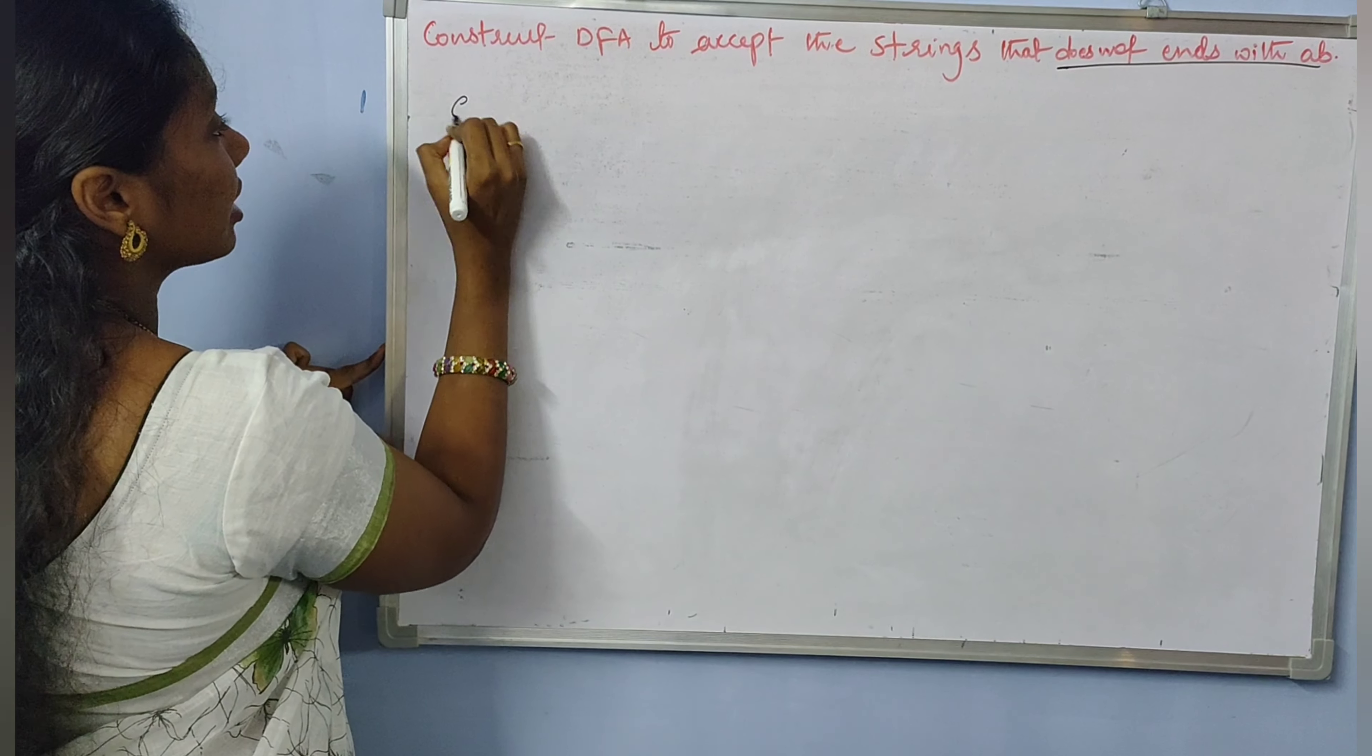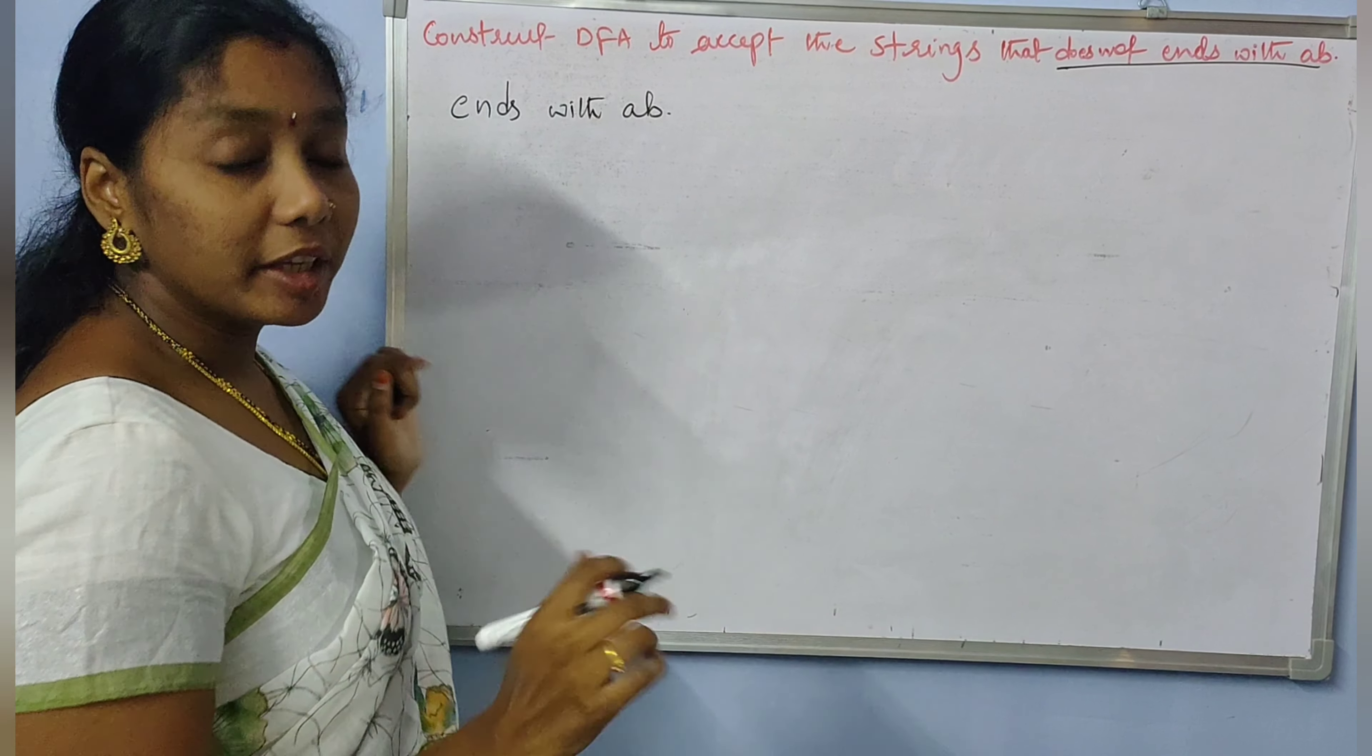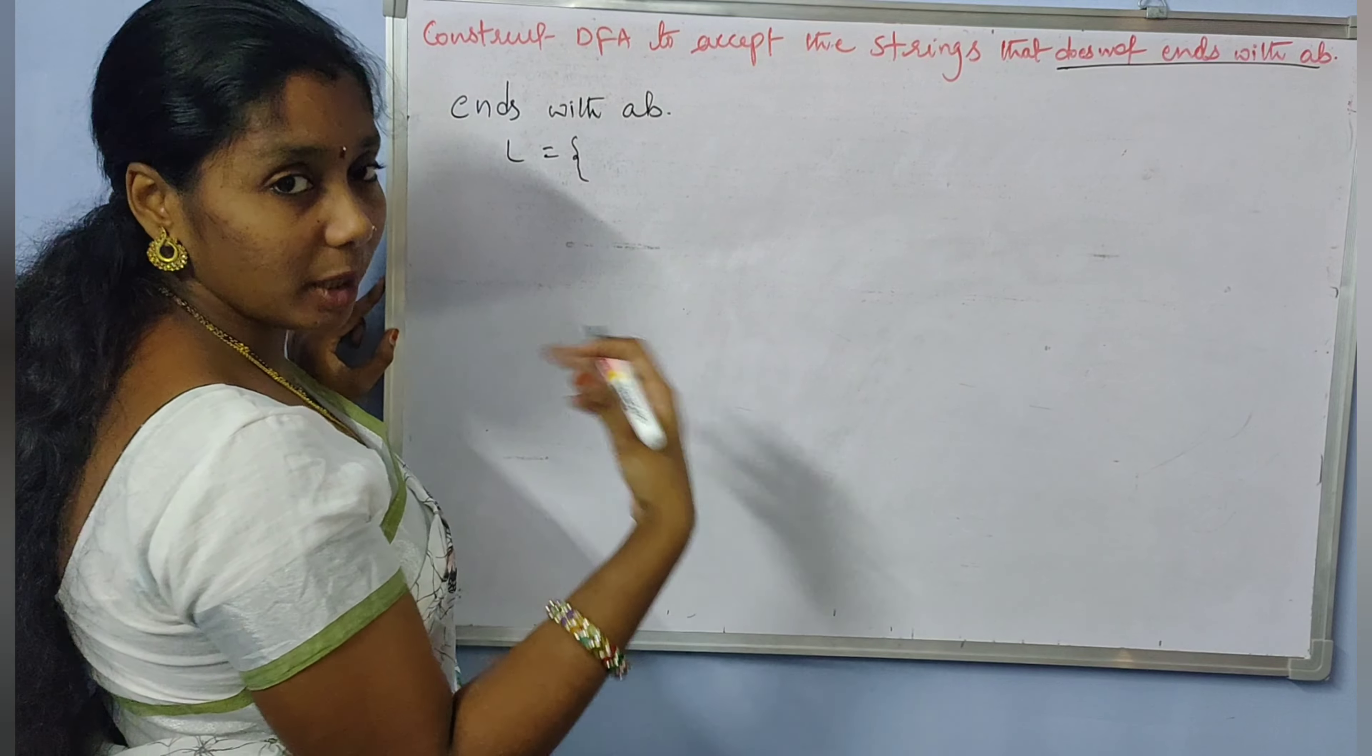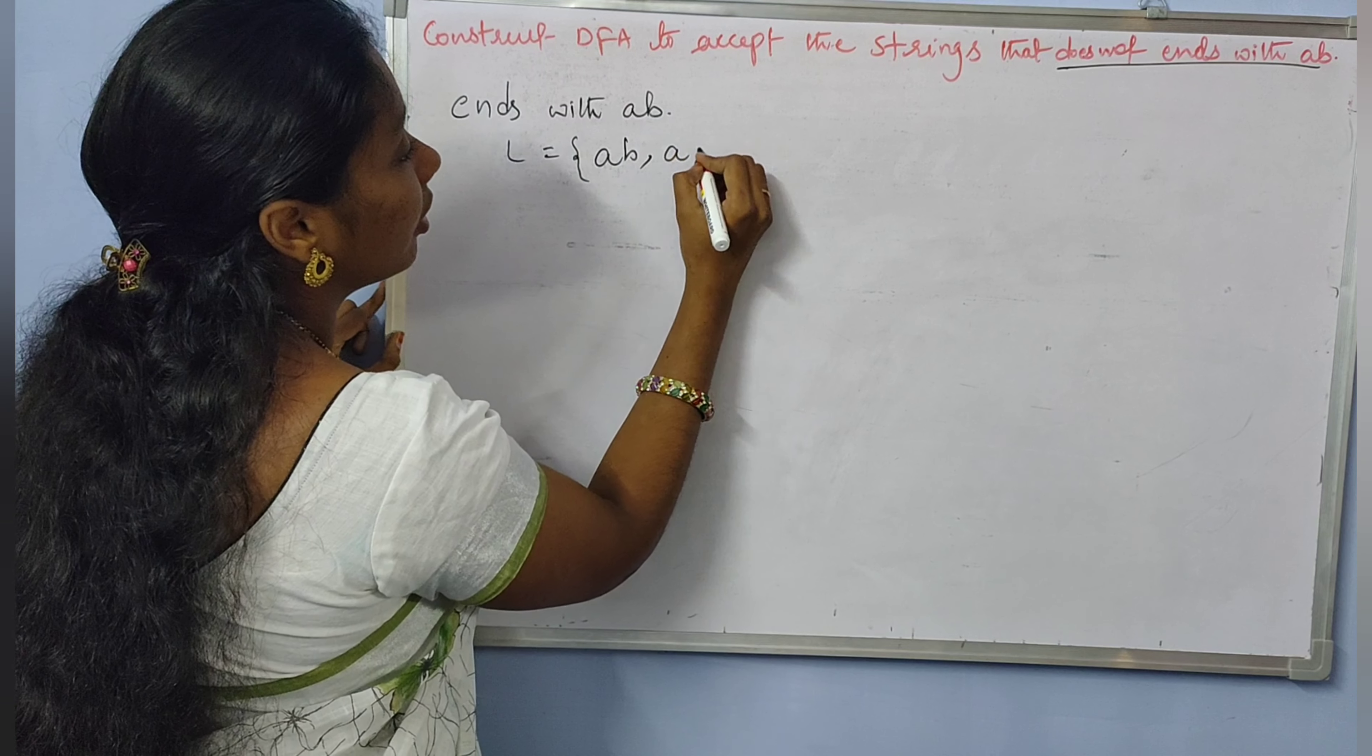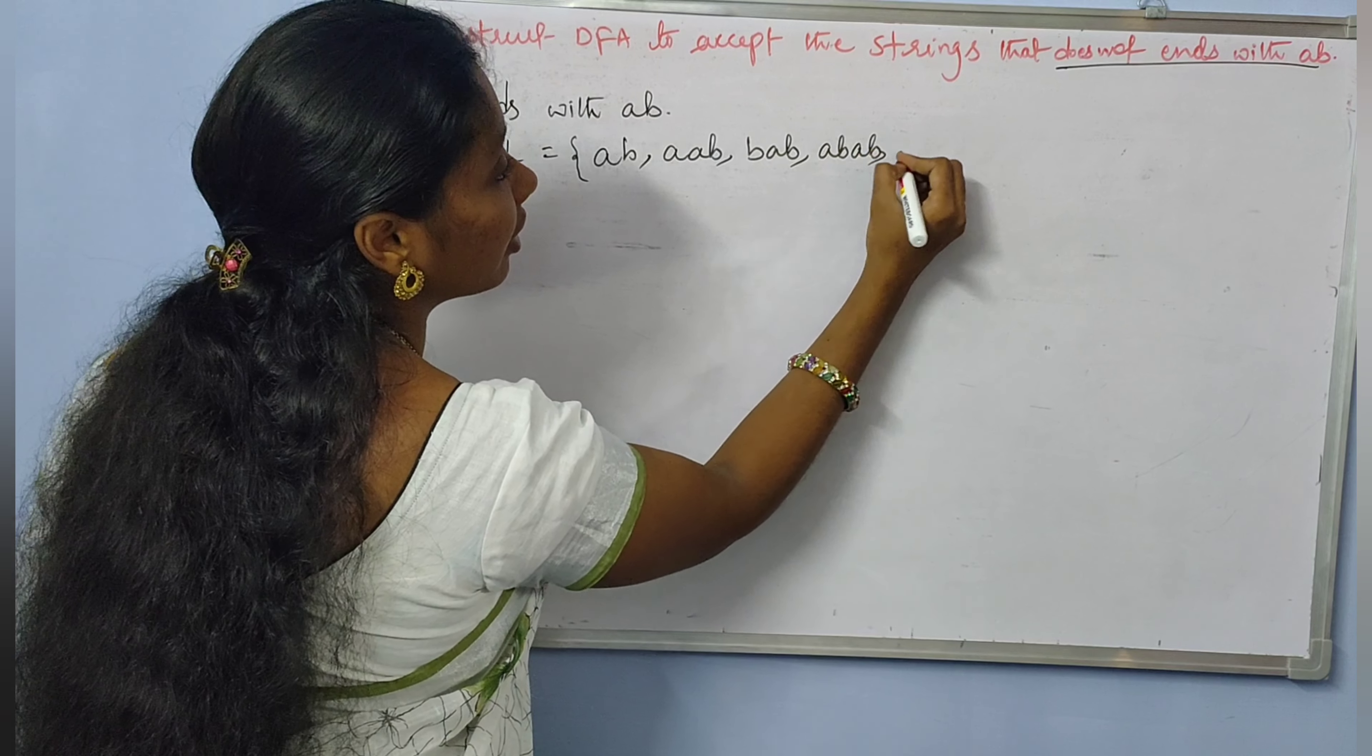We'll construct the DFA for ends with AB. The language includes: AB, AAB, BAB, ABAB, etc.